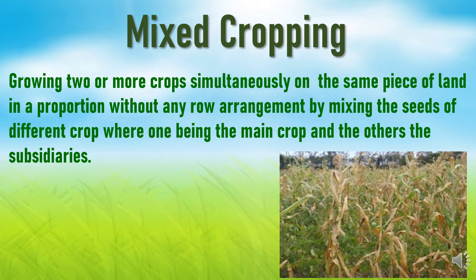Mixed cropping is the practice of growing two or more crops simultaneously on the same piece of land in a proportion, without any row arrangement, by mixing the seeds of different crops, where one is the main crop and others are subsidiaries. The seeds are mixed thoroughly before sowing, and there is no specific row ratio or plant spacing method.